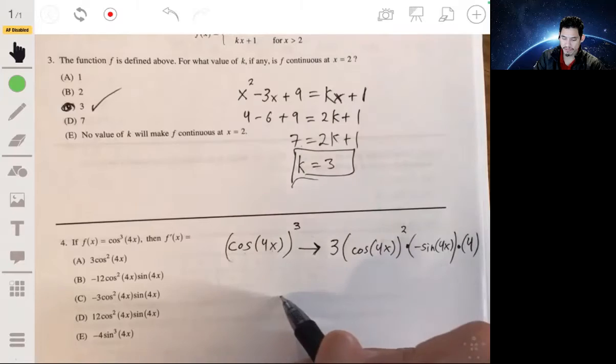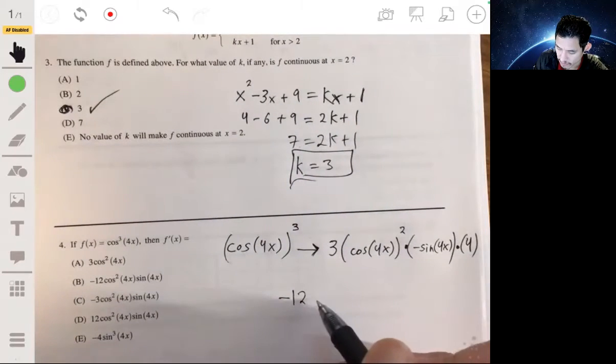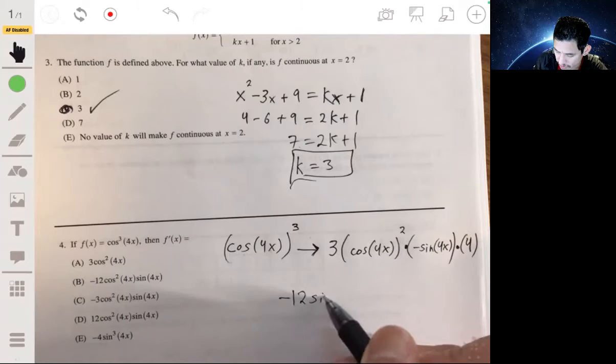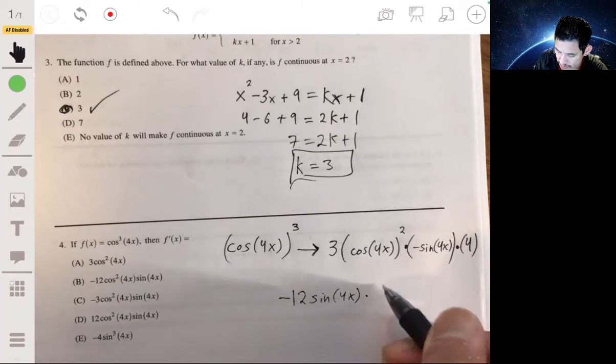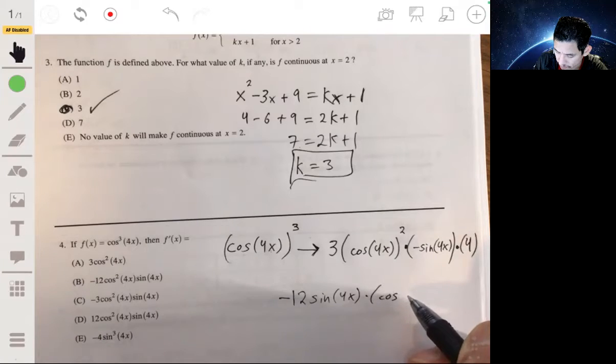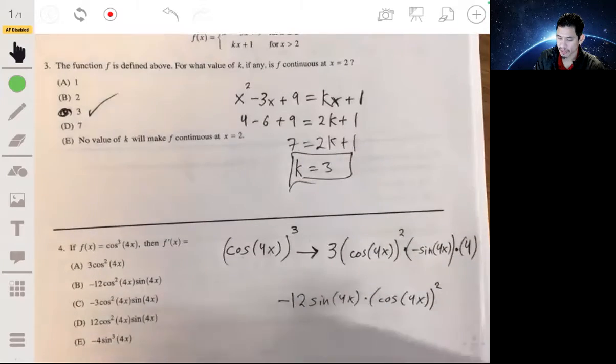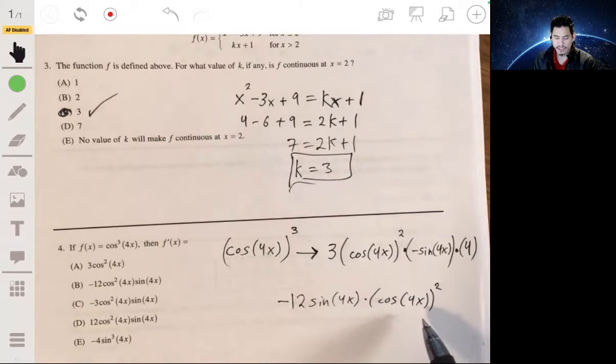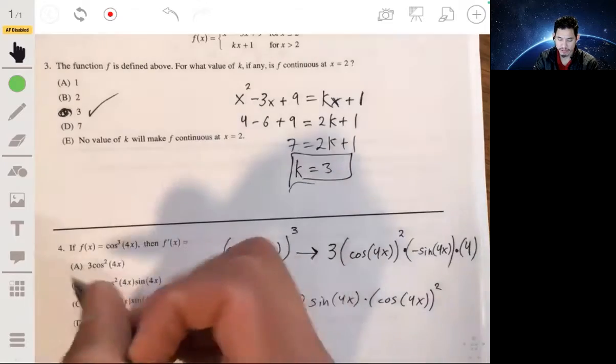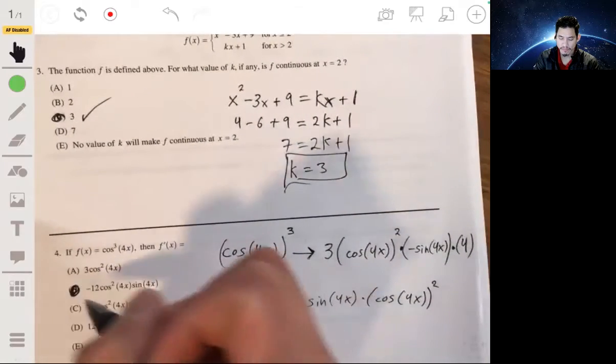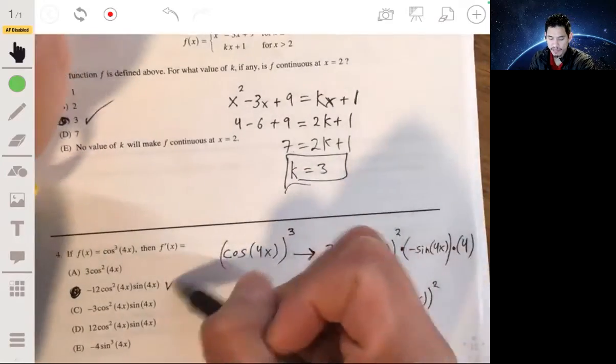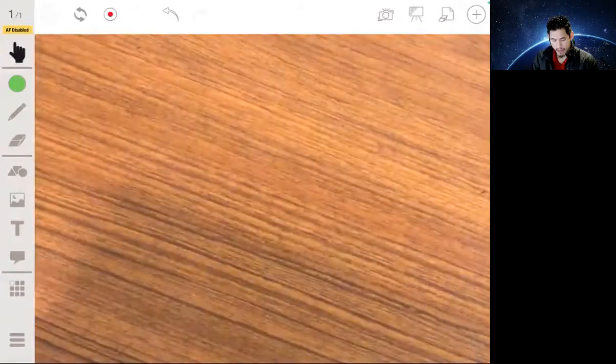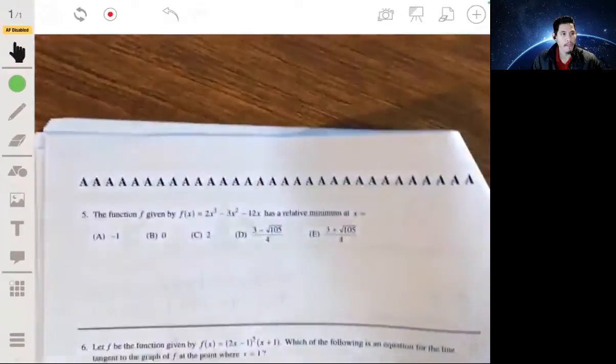And then cleaning this up, this will be negative 12 sine of 4x times the cosine of 4x all to the second power. Let's see what we got. Our answer looks like it would be b. They just have it in a different order, but it's all good because you're just multiplying.